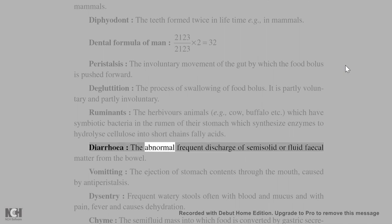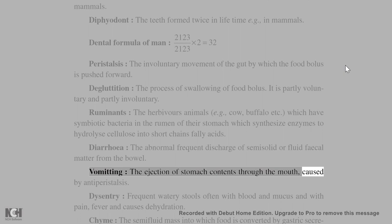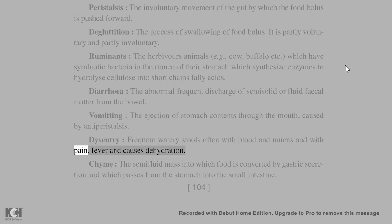Diarrhea: the abnormal frequent discharge of semi-solid or fluid fecal matter from the bowel. Vomiting: the ejection of stomach contents through the mouth, caused by antiperistalsis. Dysentery: frequent watery stools, often with blood and mucus, with pain, fever, and causes dehydration.